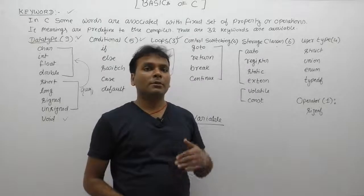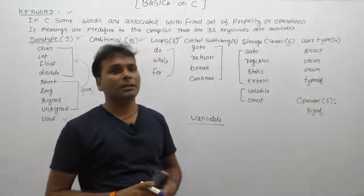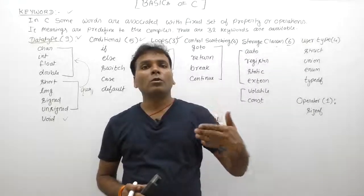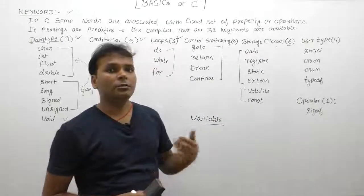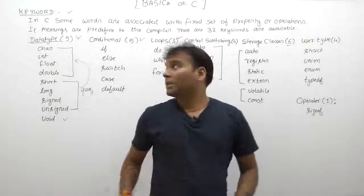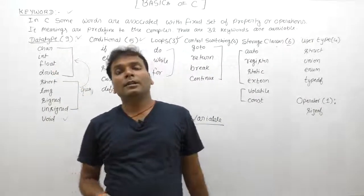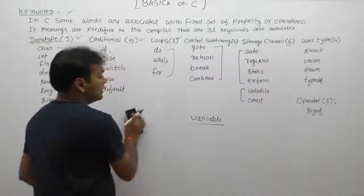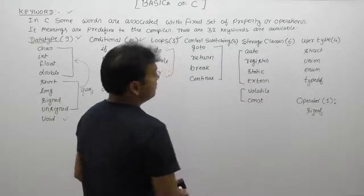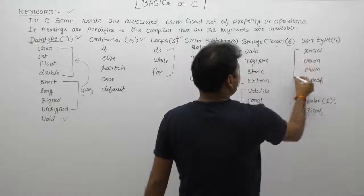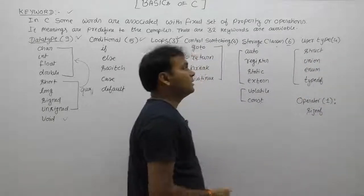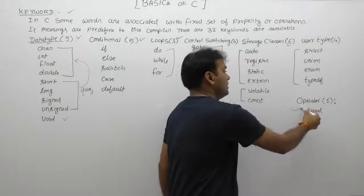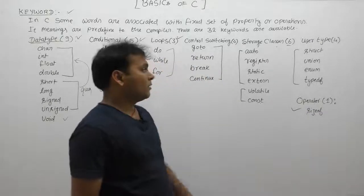User-defined data types: C also allows you to provide your own data types in a user-defined manner. Char and int are predefined data types, but if you want to create your own data types, you can create them by using the following keywords: struct, union, enum, and typedef.